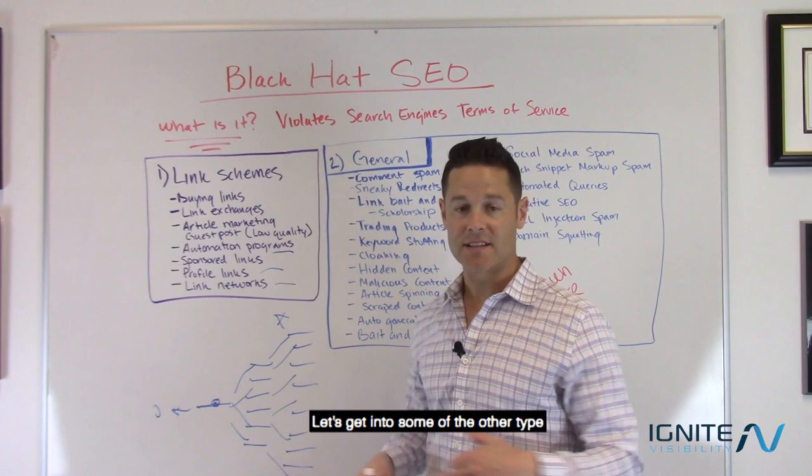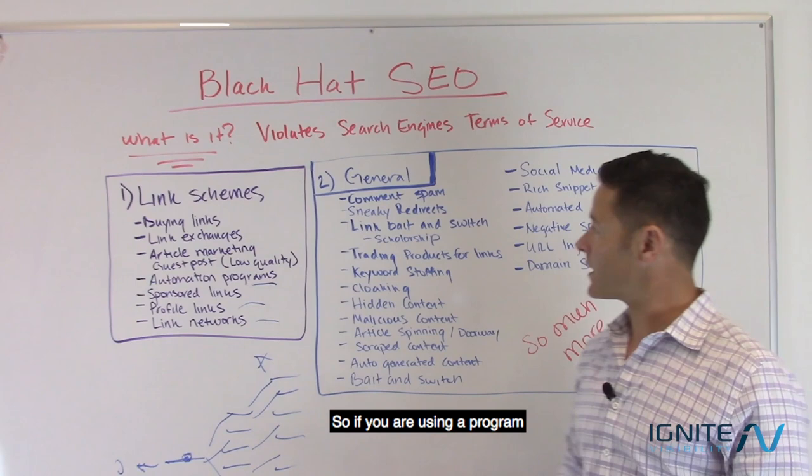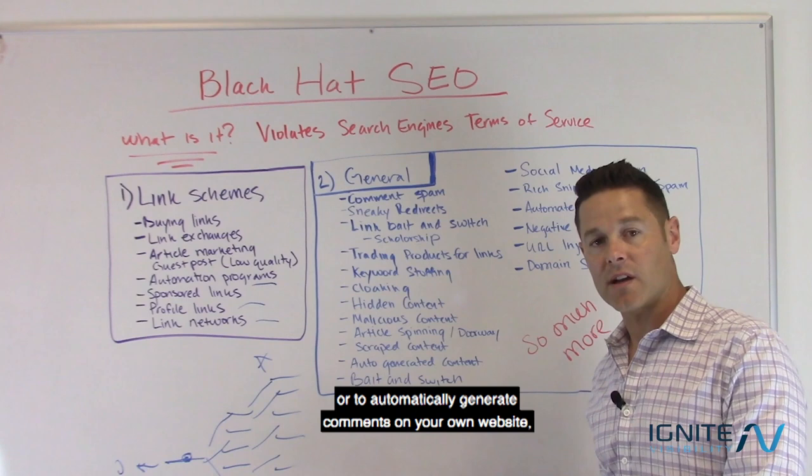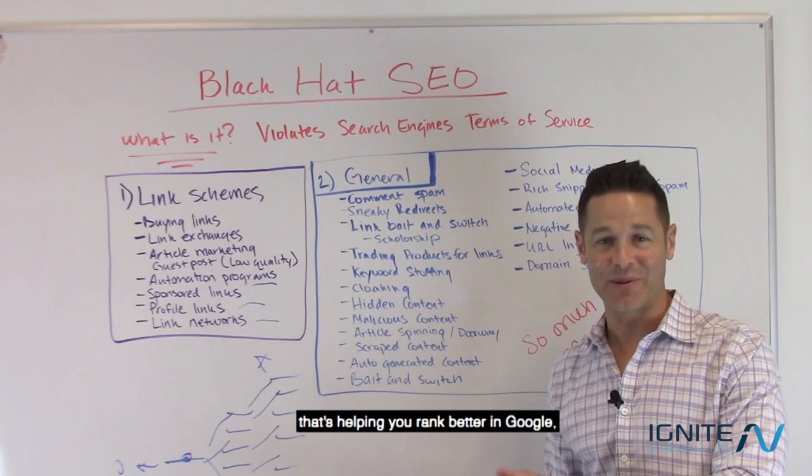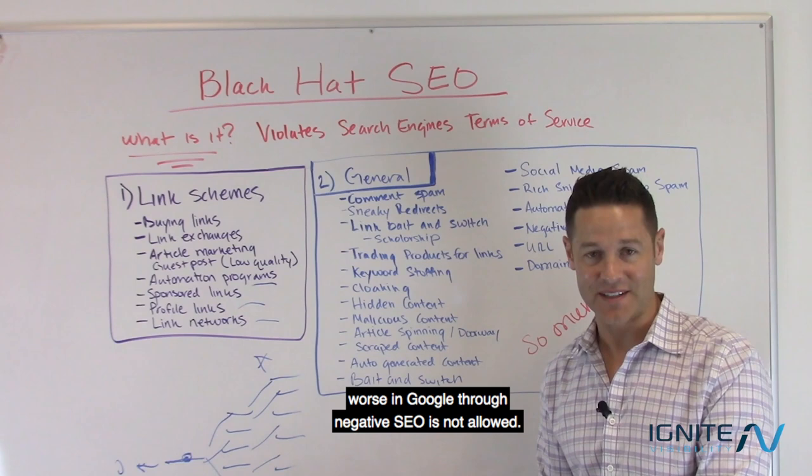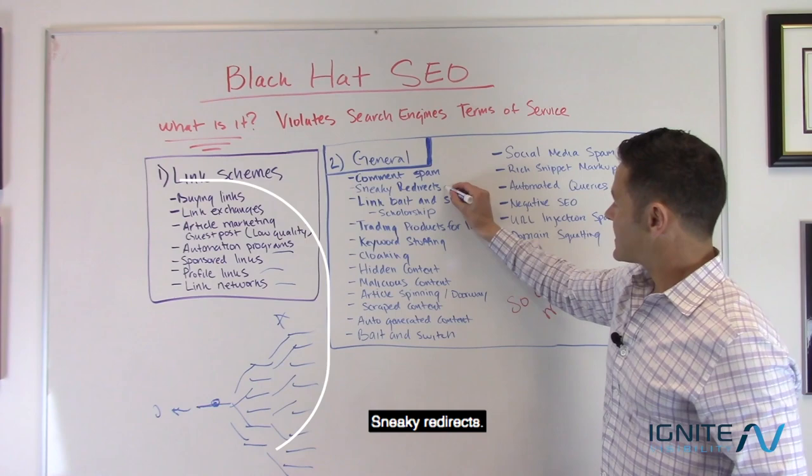Let's get into some of the other types of Black Hat SEO. Comment spam: if you're using a program to automatically generate comments on other websites or your own website — any fake comment that's helping you rank better in Google, or hurting your competitors through negative SEO — that is not allowed and that is Black Hat SEO.